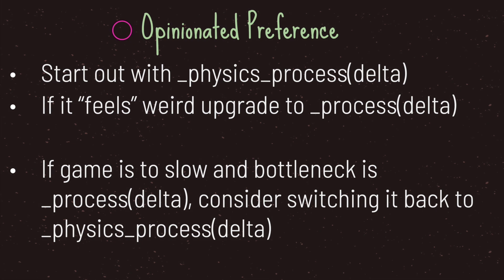I have a project on GitHub with two scripts. Script one is attached to the root node and shows time compounding with delta time outputted to the console. Script two is attached to a sprite and does rotation, so you can see for yourself if rotation looks different when running physics process versus process. Go ahead and play around to see what you like and don't like about both methods.